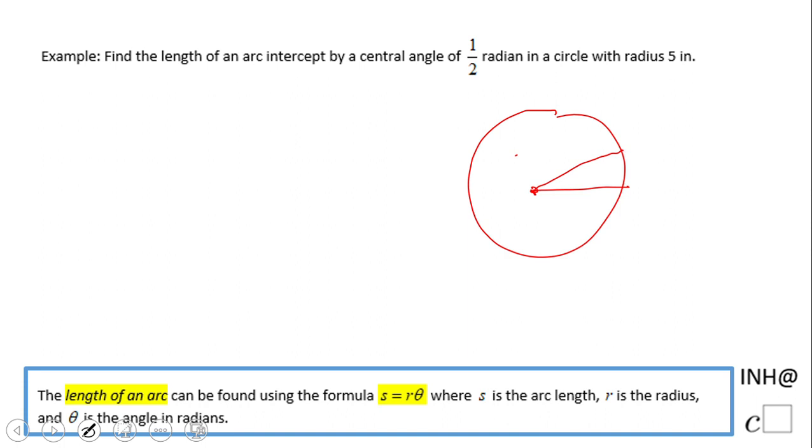This is the arc we want to find out how long it is. The radius is five and the angle is half a radian, as they stated.